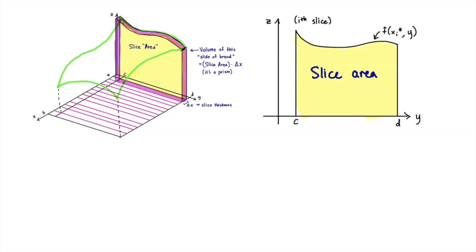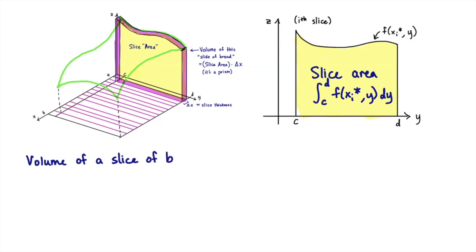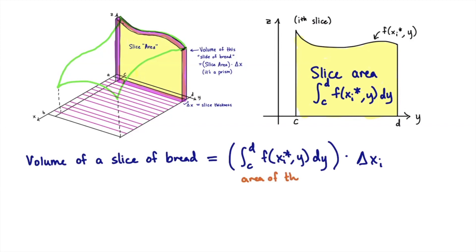The slice area is the one-dimensional integral from c to d of f(xᵢ*, y) dy — that's a fixed number for x. So the volume of a single bread slice equals the area of the face, which is the integral from c to d of f(xᵢ*, y) dy, times the thickness Δxᵢ. After doing this definite integral with respect to y, y disappears and we're left with a formula in xᵢ*, which we call g(xᵢ*). So the slice volume is g(xᵢ*) · Δxᵢ.